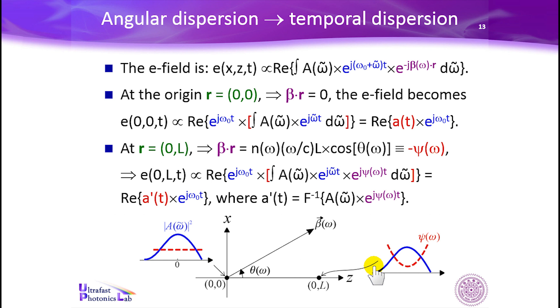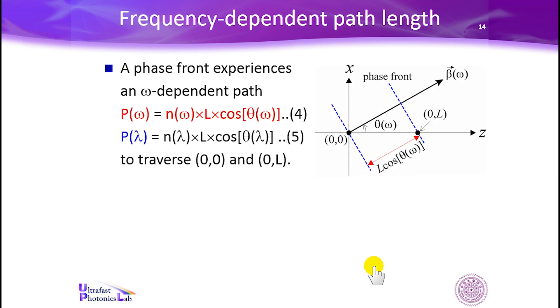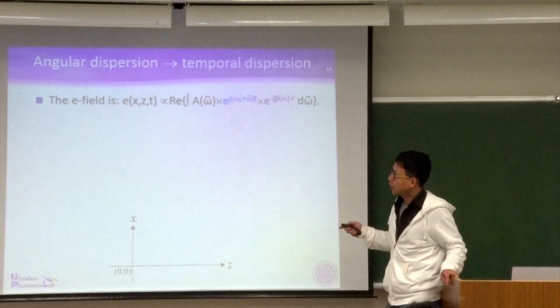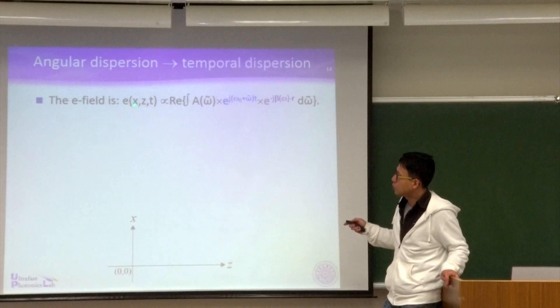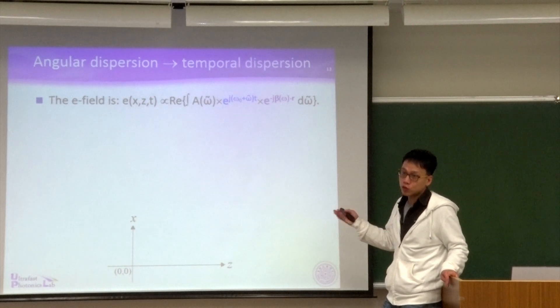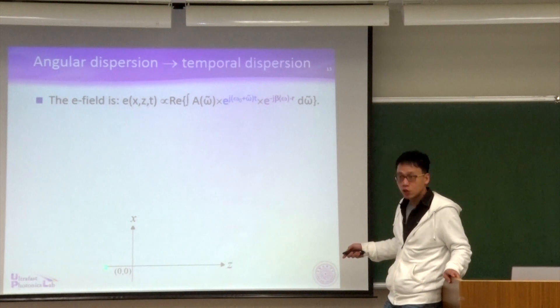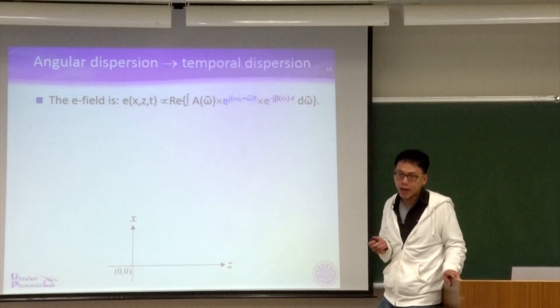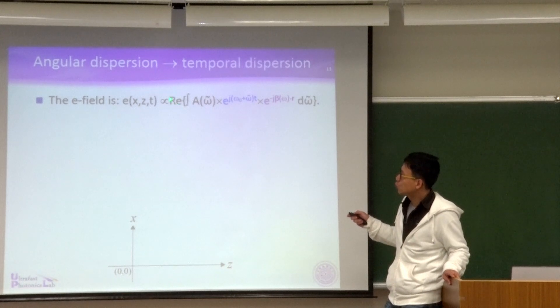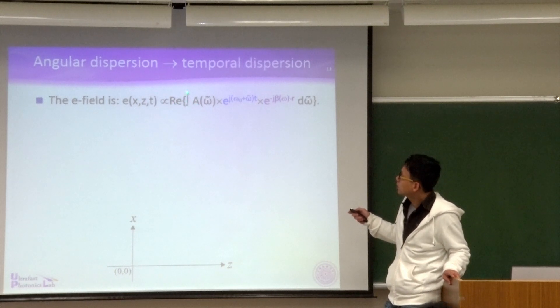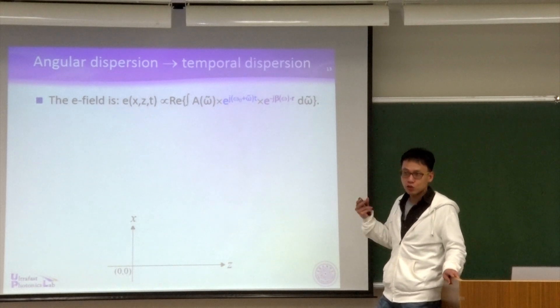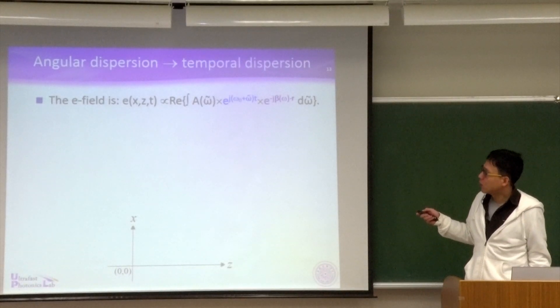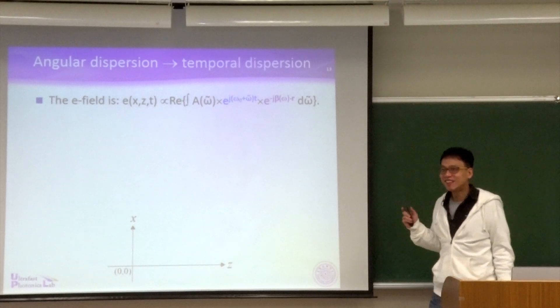Now, to our surprise, angular dispersion will automatically transfer to temporal dispersion. Say we can write down the electric field as a function of x, z, and t. Here we assume there is no y-dependence. This is z-axis, reference direction. This is x-axis, the transversal direction. And it's also a function of time. x, z, t. It is proportional to real part of the integration of this one. Could you justify why is that? Why an electric field can be always written as real part of this integral?